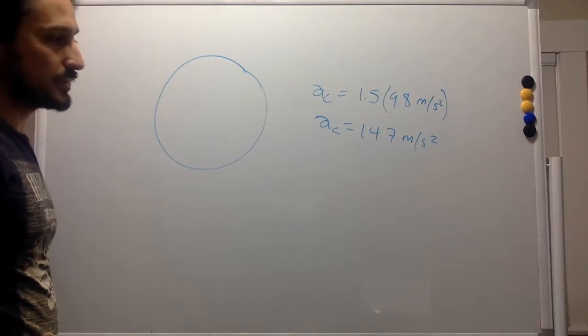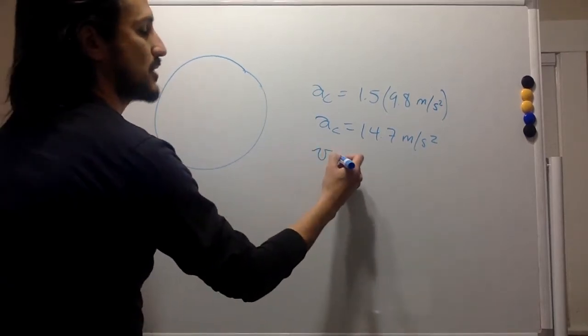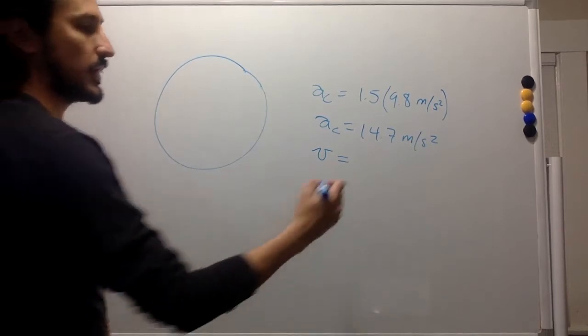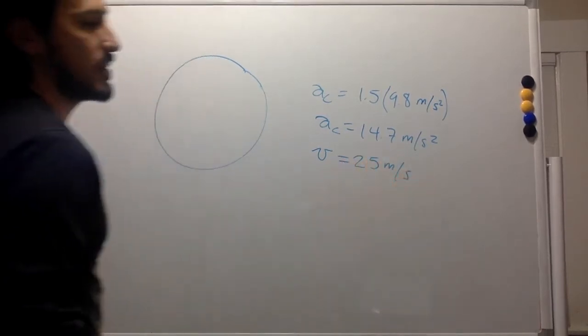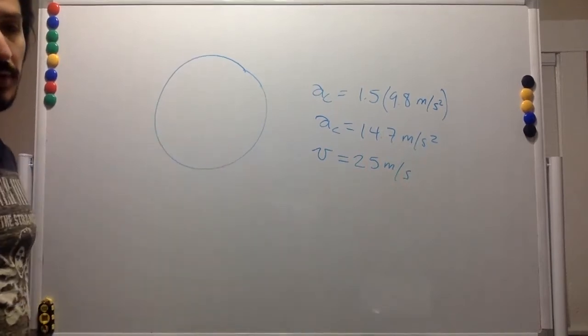If the bird is flying at 25 meters per second, what is the radius of curvature?